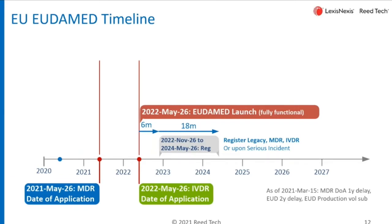Now a couple of timeline points we need to talk about. In the bottom left we see the date of application — delayed one year, currently at May 2021, just a few weeks away. The date of application for the IVDR is a year later, in May 2022. The current plan is for EUDAMED to be fully functional and launched on May 26, 2022. Since that launch date is after the date of application, the legislation builds in a six-month delay that starts all the effective items, regulations, and specifications related to EUDAMED reporting. One of those is the registration of medical devices, and there's an 18-month window for registration that goes out to May 2024 — you obviously want to be aware of that.